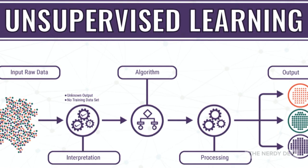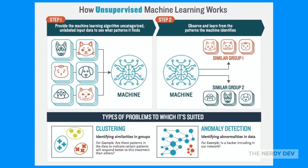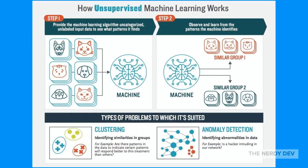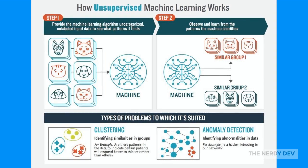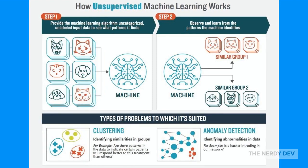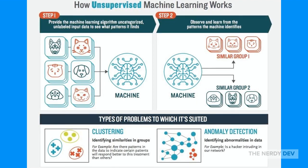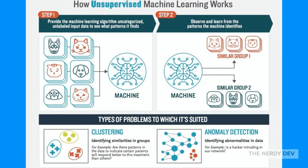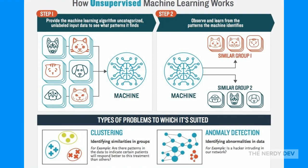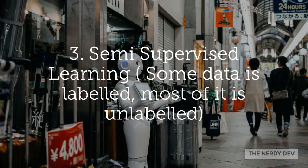For example, given many images of cats and dogs which the machine has never seen before, the machine has no idea about the features of cats because it hasn't been given the feature set. In unsupervised learning we cannot categorize them into dogs and cats directly, but it can categorize them according to similarities, patterns, and differences. There is no training data or examples provided.